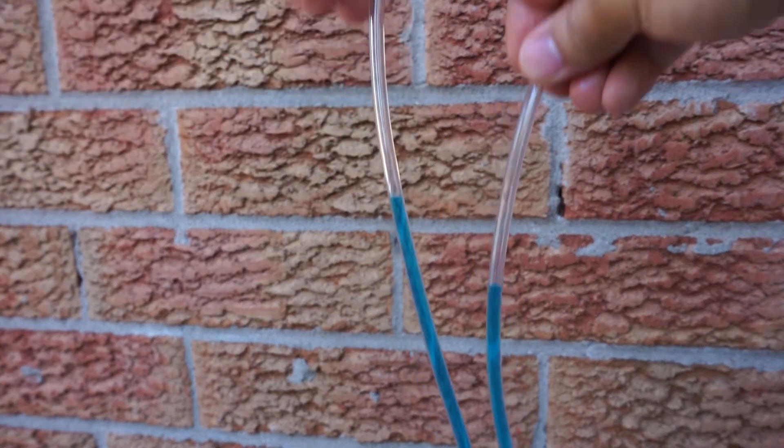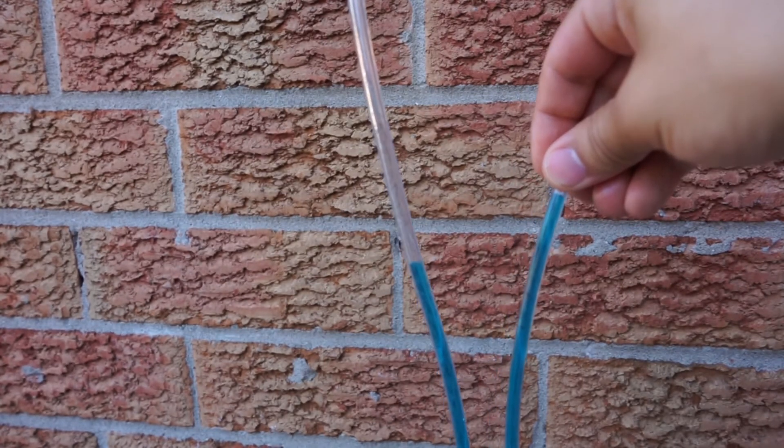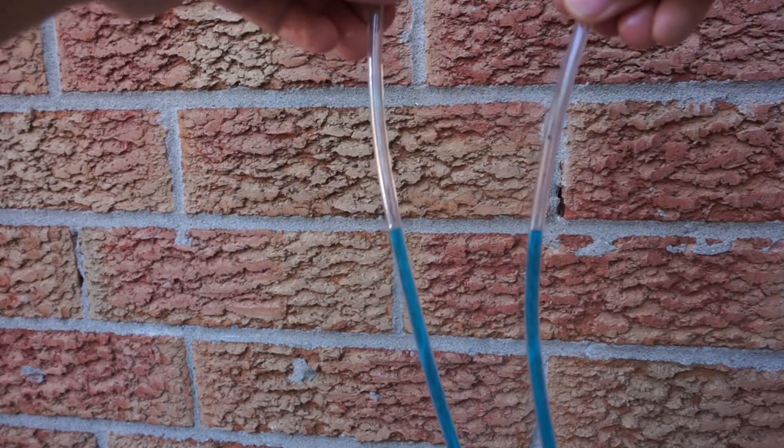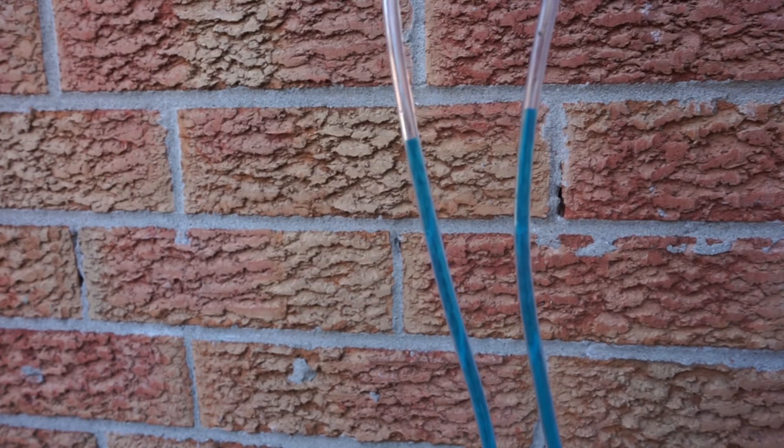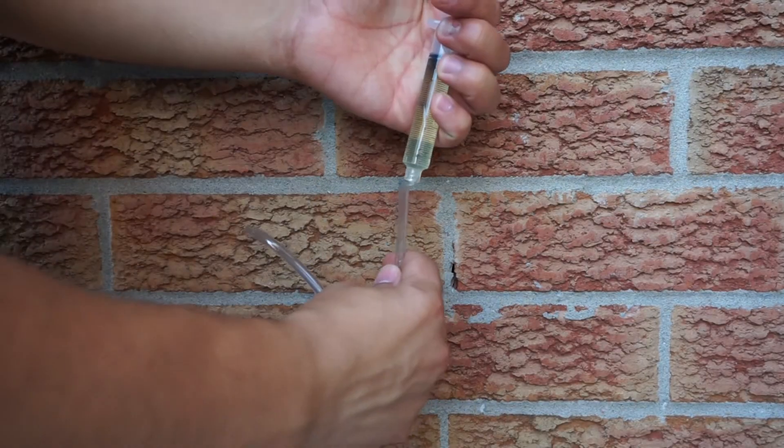So we've seen how water in a siphon will always match each other's height due to the equalization of fluid pressures. But what would happen if we played with the density and put some vegetable oil on one side of the system?